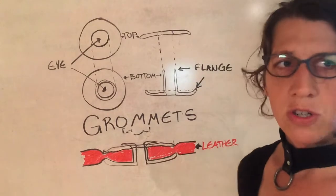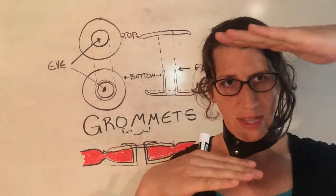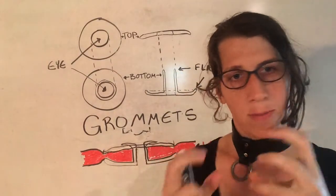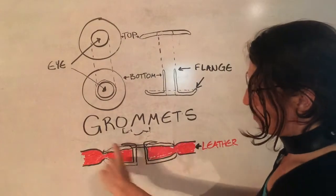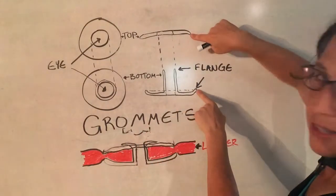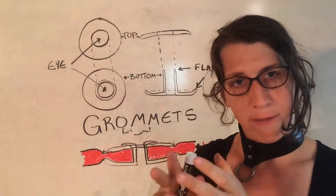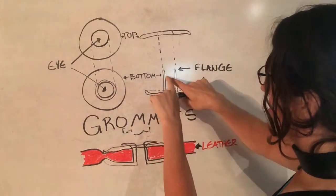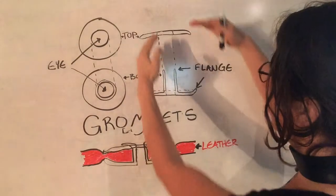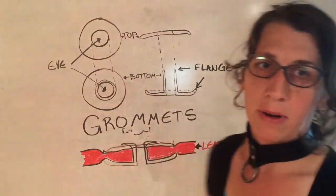So when you're grommeting, what you're trying to do is take your material and really compress it tight so it has a firm grip. So these little barbs on the end, right, these little bits of the flange can grab onto the leather, hold it firmly, and then this interior cord gets spread out to hold the top and bottom parts together.